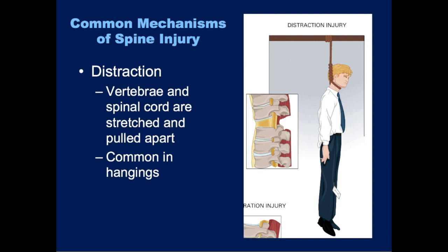A distraction injury is when the vertebrae and spinal cord are essentially stretched and pulled apart. This is most commonly seen in hanging injuries. If you have a patient who attempted suicide by hanging, even if they survived, you have to be mindful that they may have injured their spinal column and spinal cord, and you should take appropriate spinal precautions.